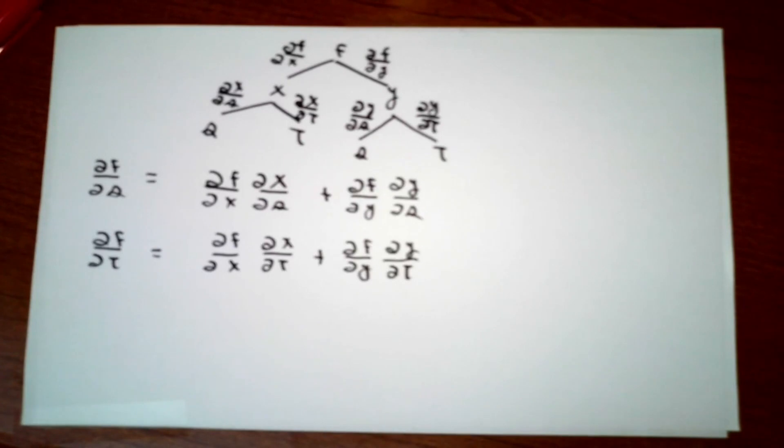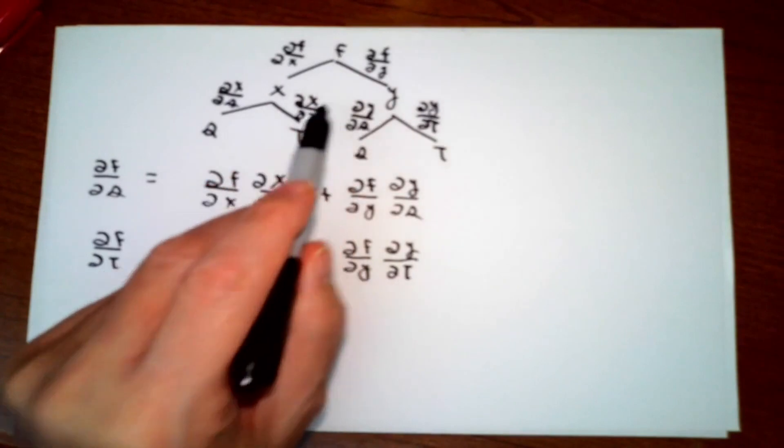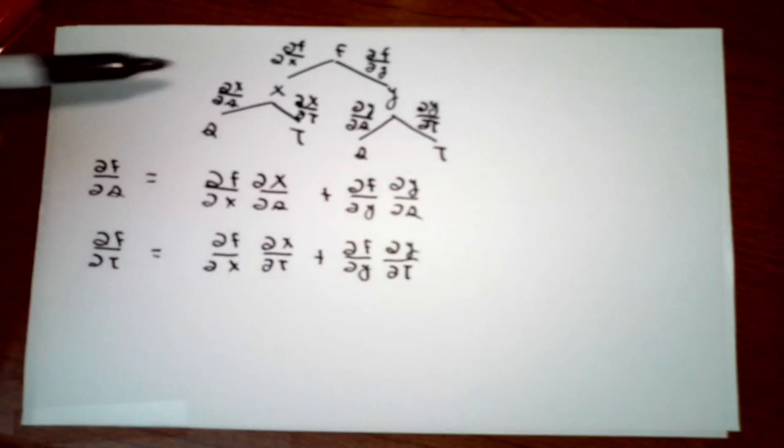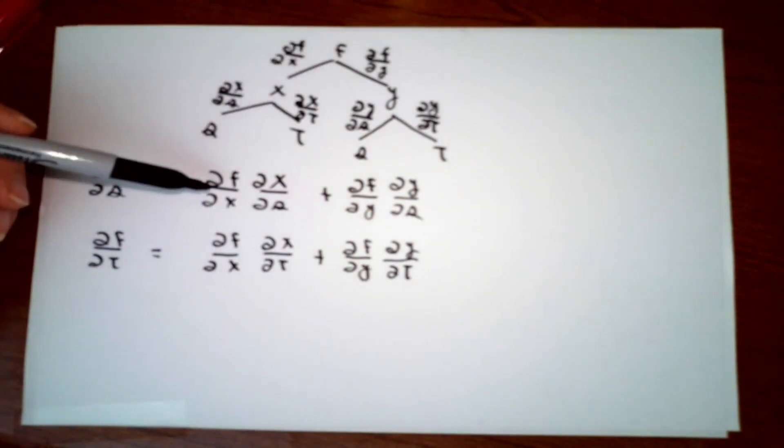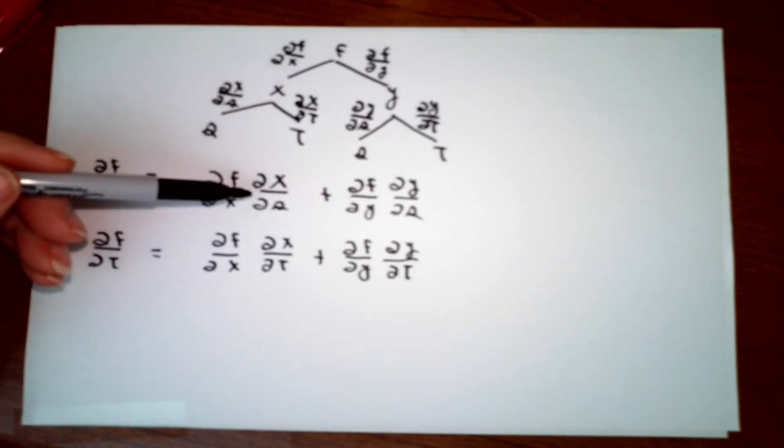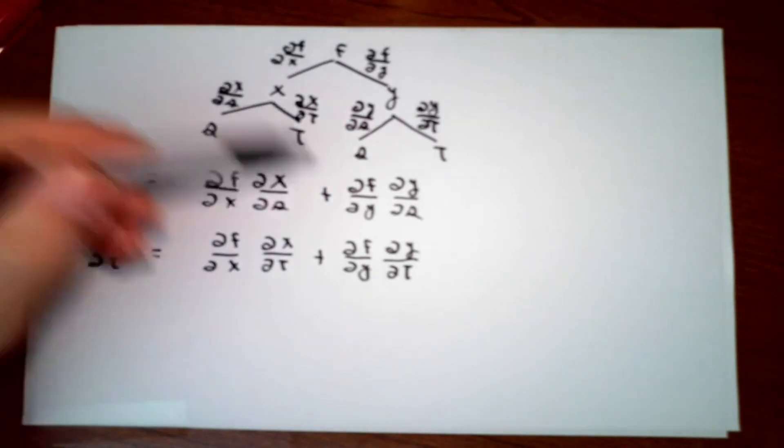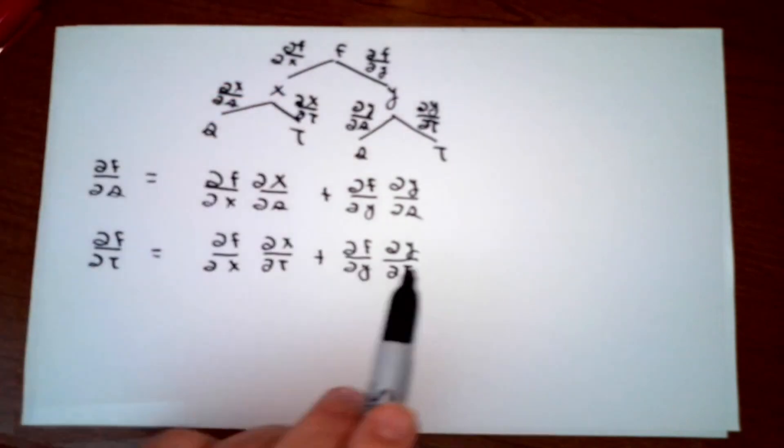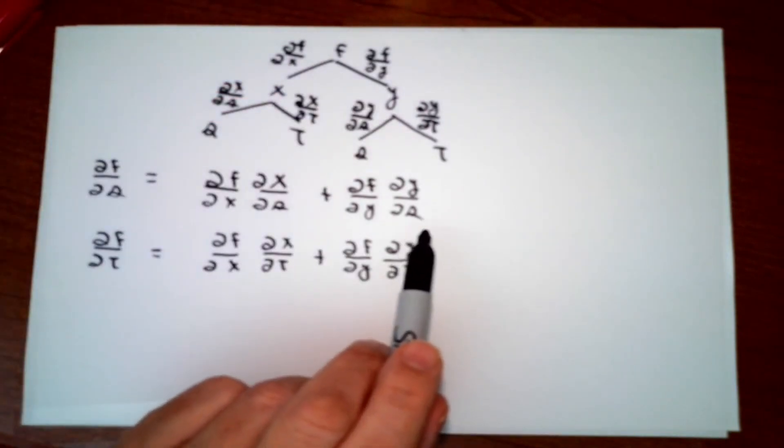As before, to find the partial of f with respect to s, I'll look at all pathways through my diagram that start at f and end at s: partial of f with respect to x times partial of x with respect to s, plus partial of f with respect to y times partial of y with respect to s. Follow the same pattern, and you'll get a corresponding formula for the partial derivative of f with respect to t.